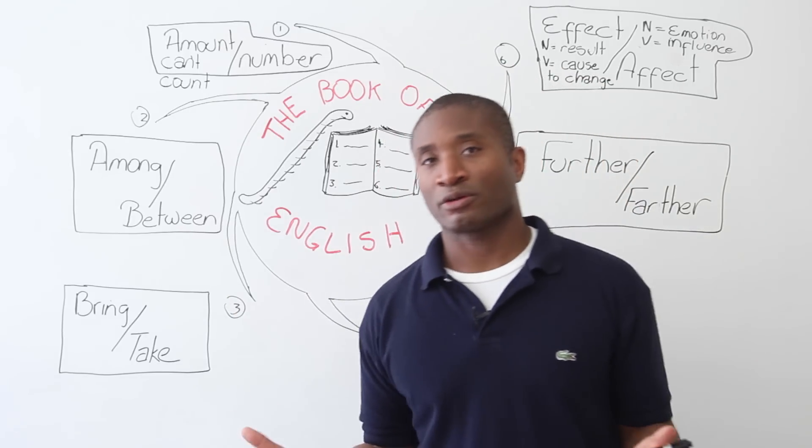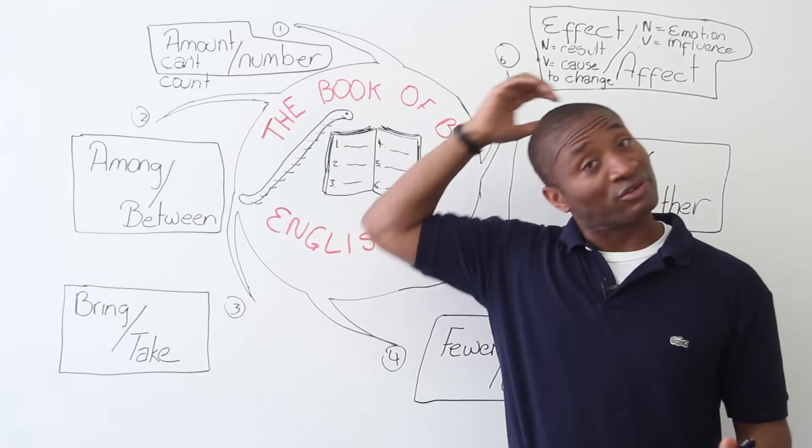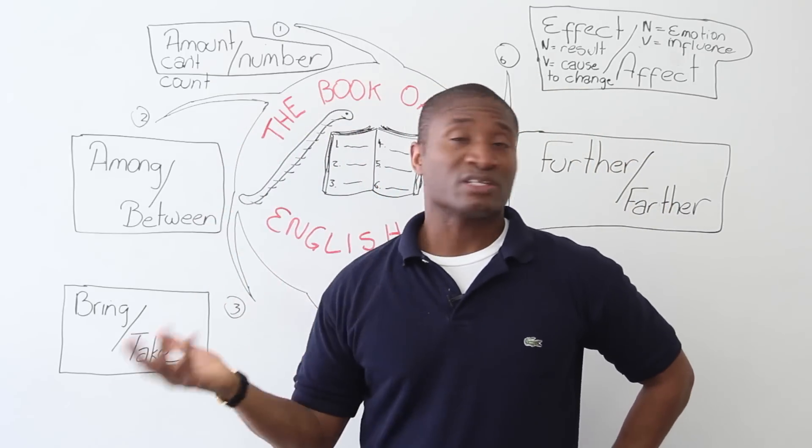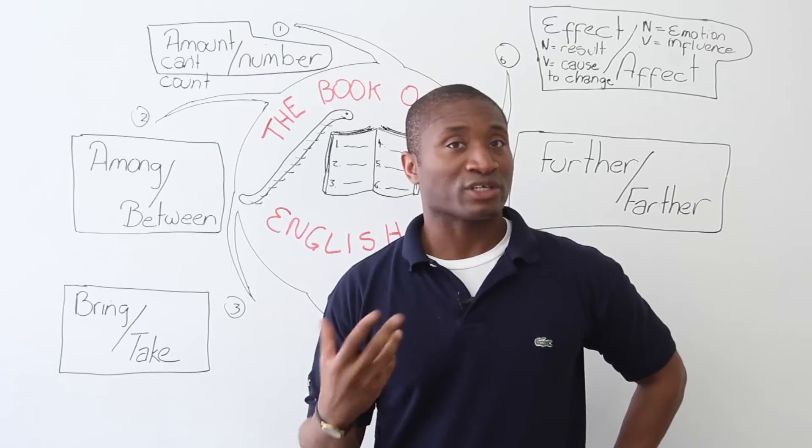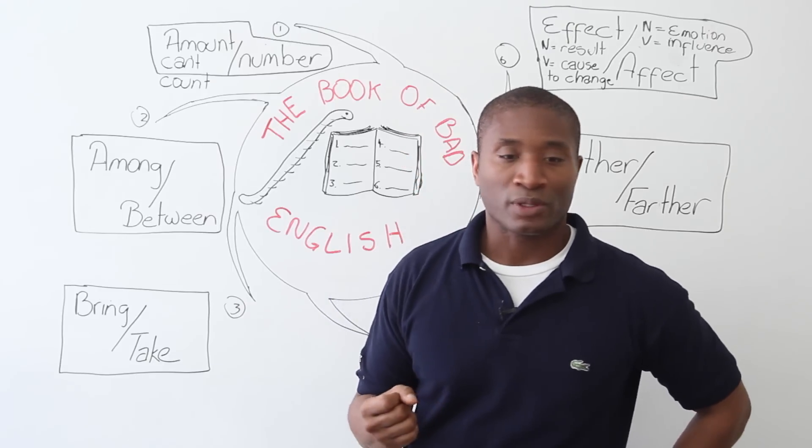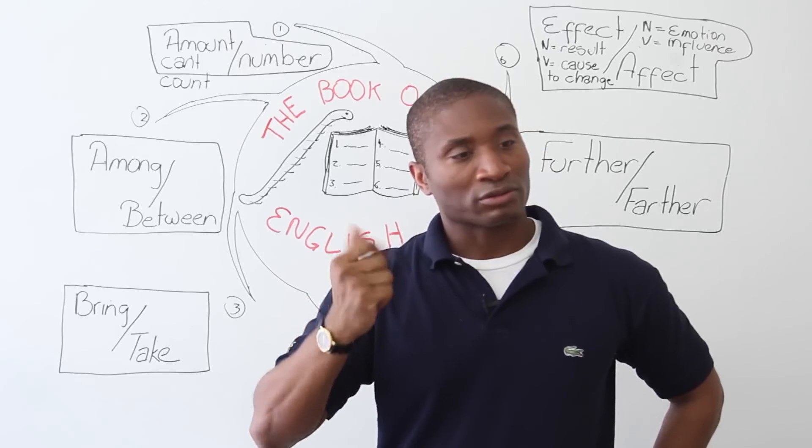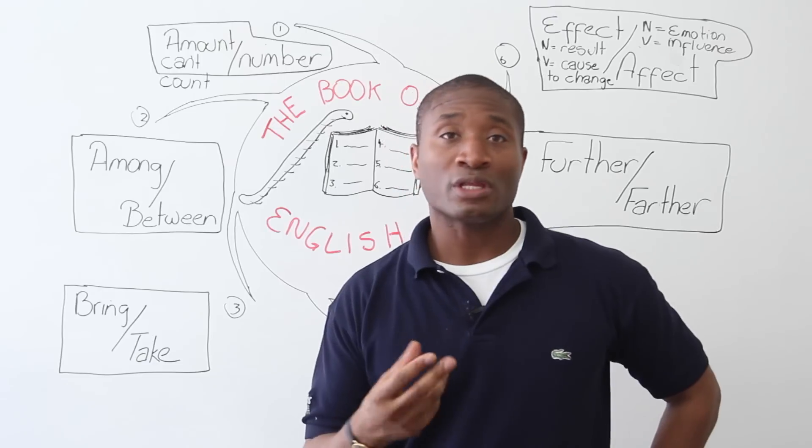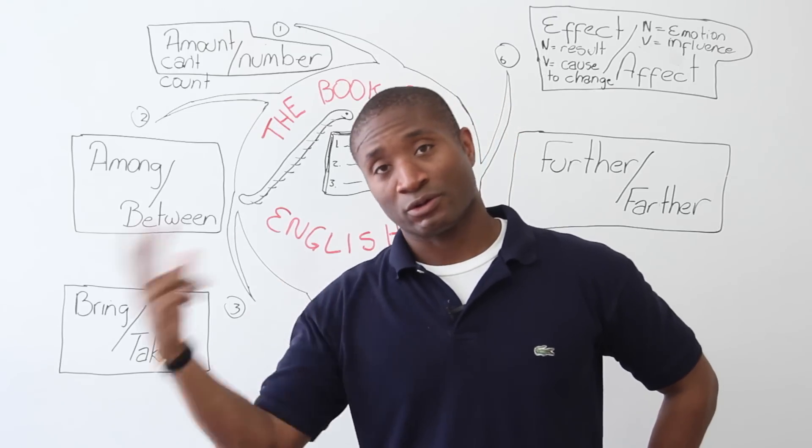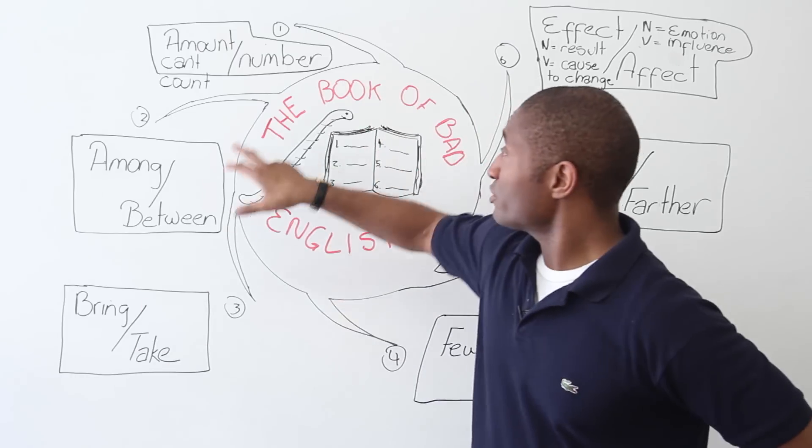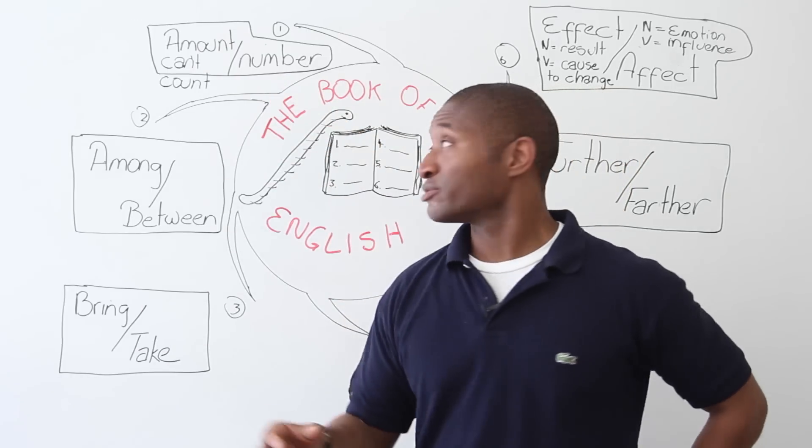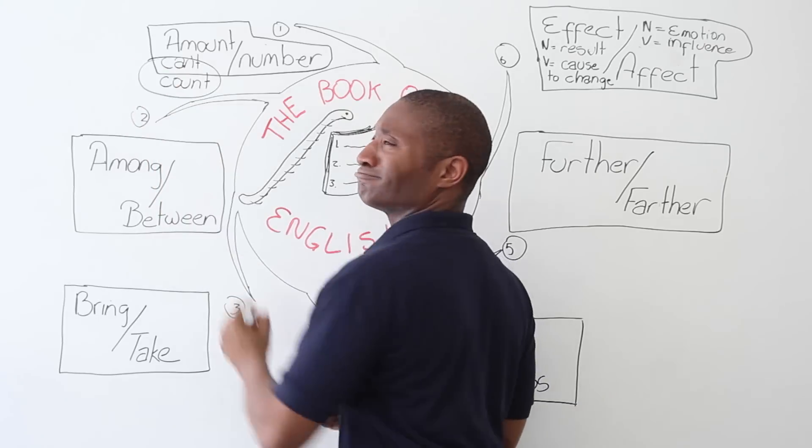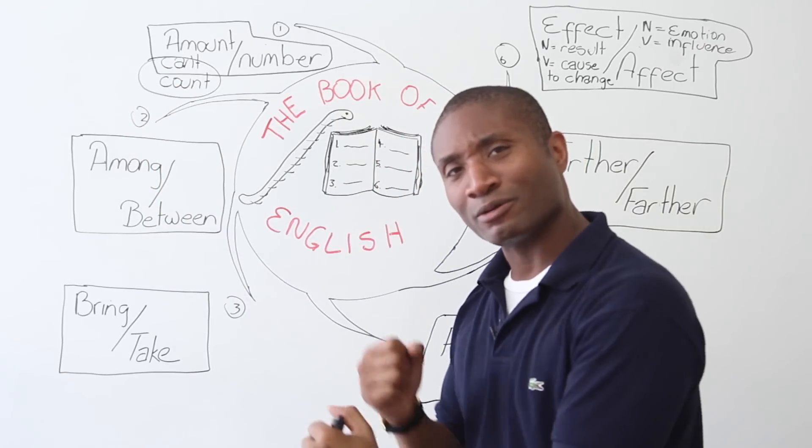You can't count water, but you can count numbers. So the number of people who come to the city is in the thousands, so you can actually count them. Here's an example. Tell me if this is right or wrong. The amount of students who are late is growing every day, or the number of students who are late is growing every day. You should say number because you can count students.